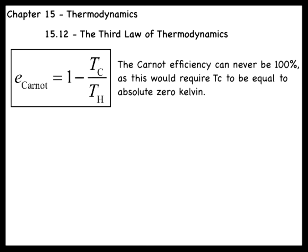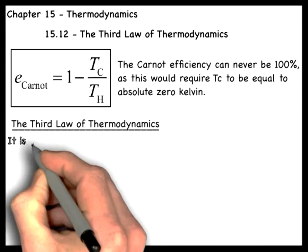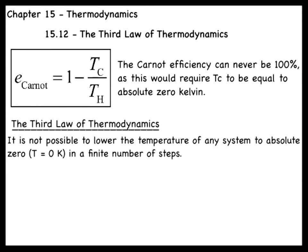The third law of thermodynamics strictly states that it is impossible to reach this temperature. It is not possible to lower the temperature of any system to absolute zero in a finite number of steps.